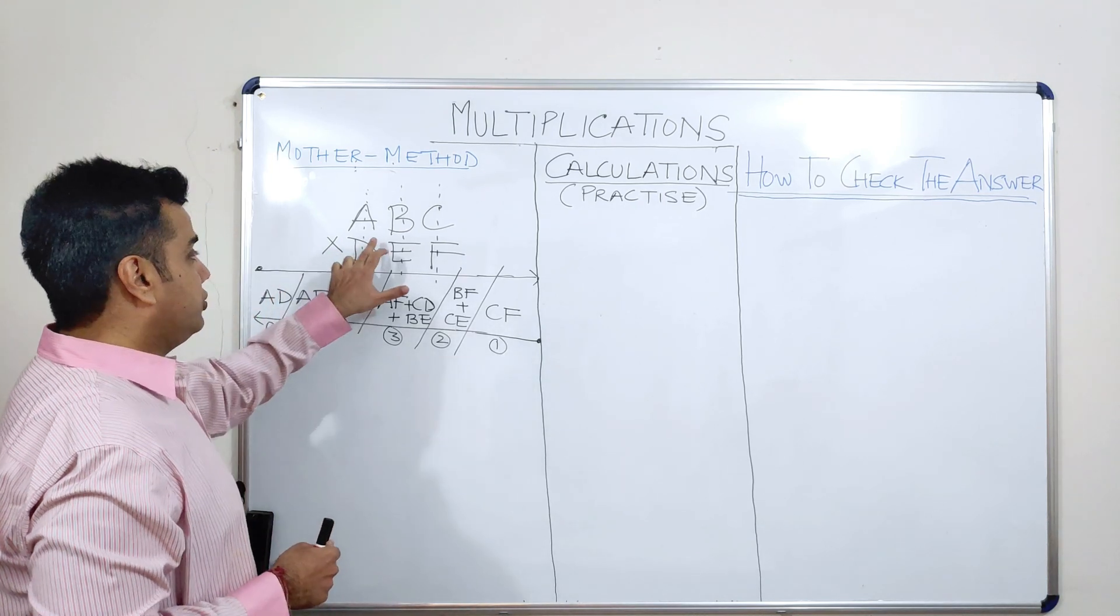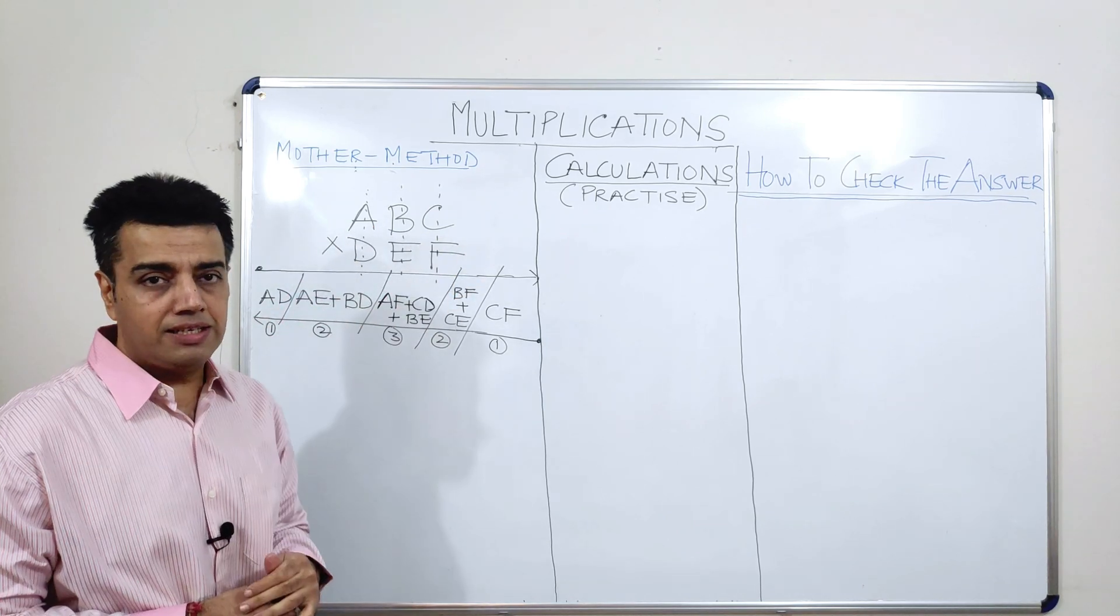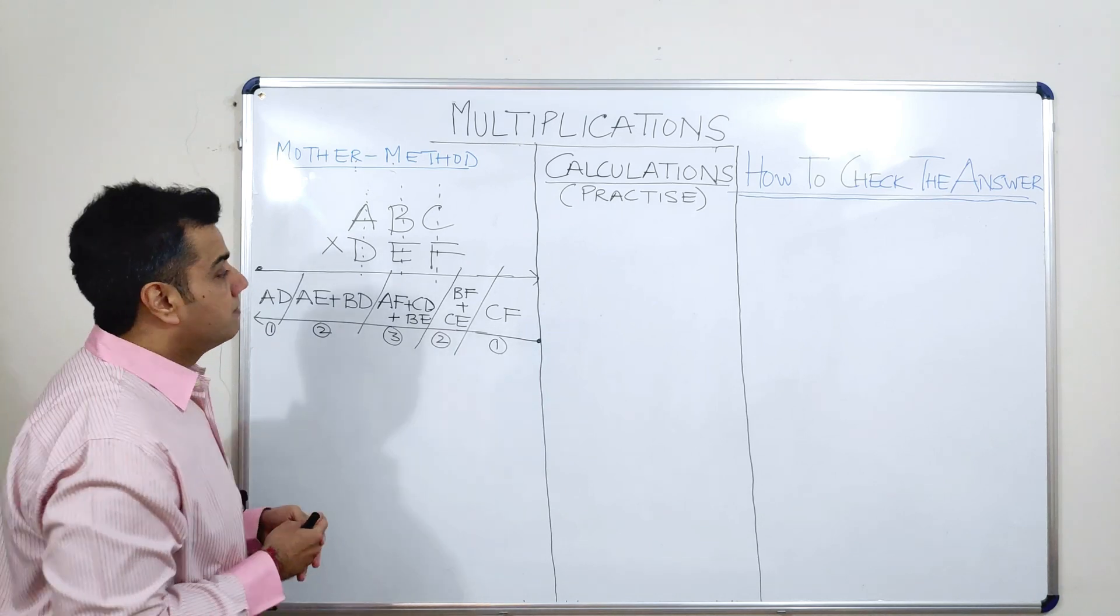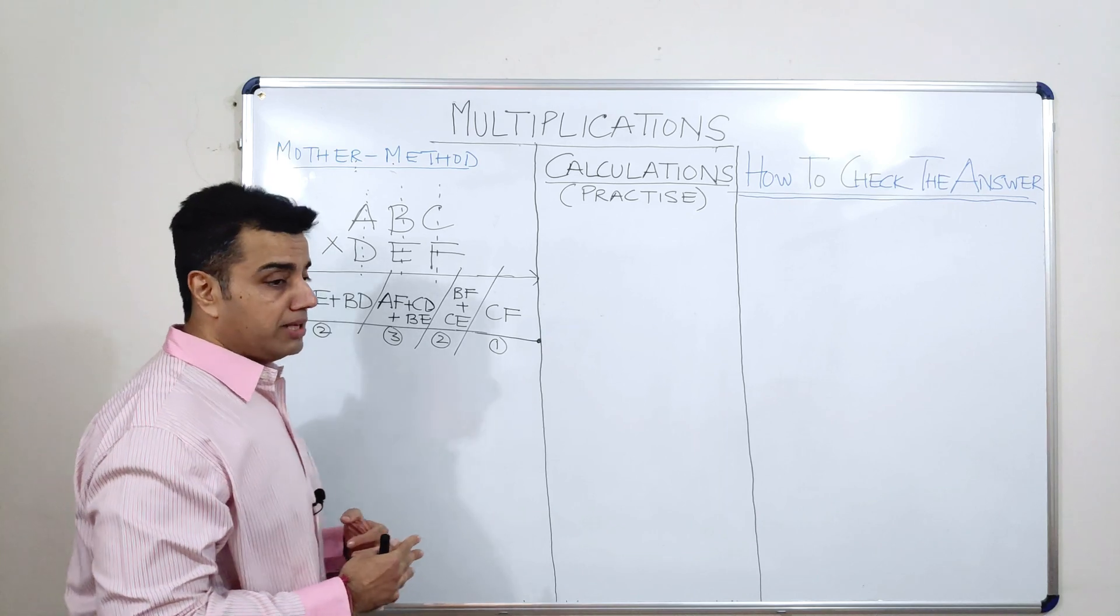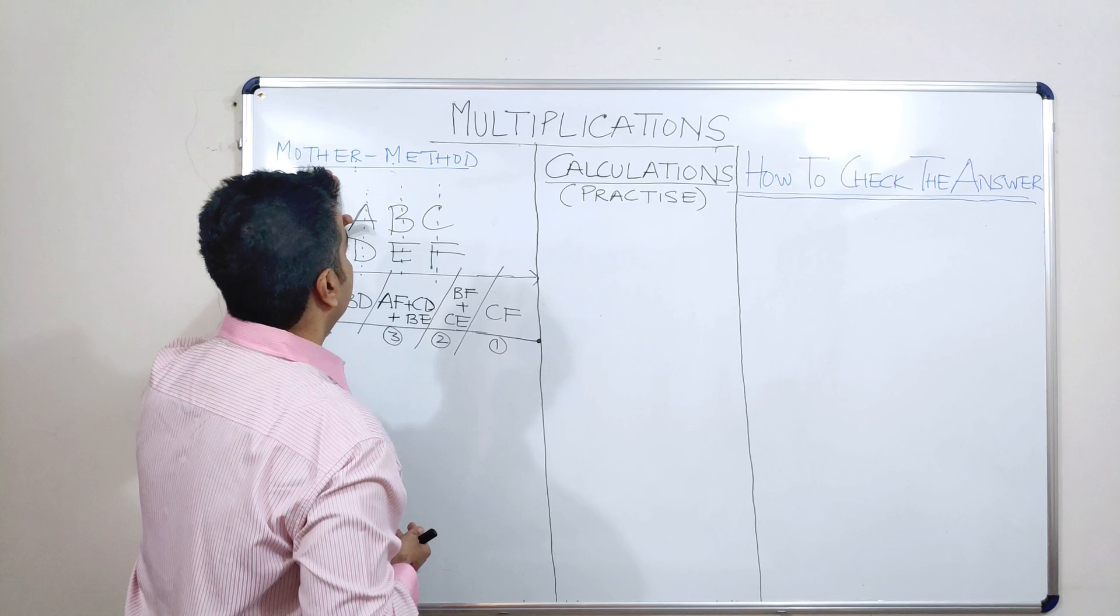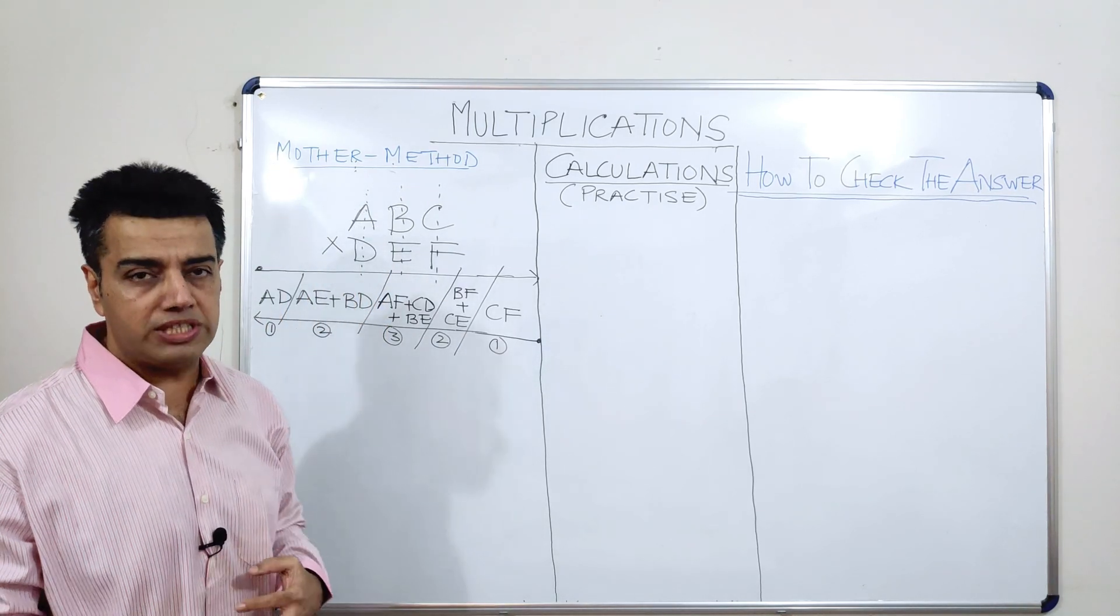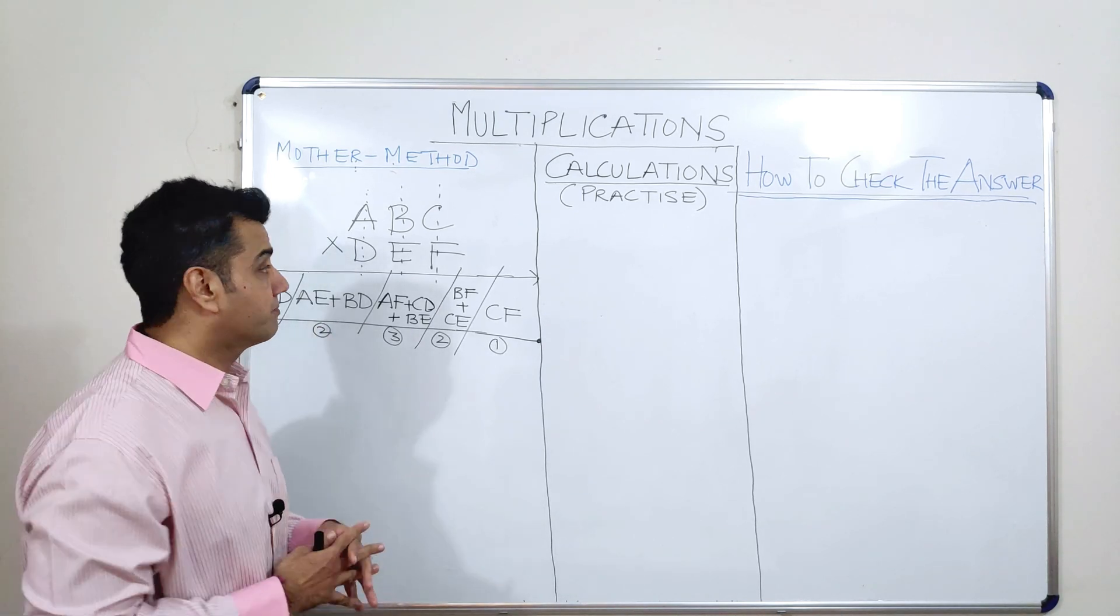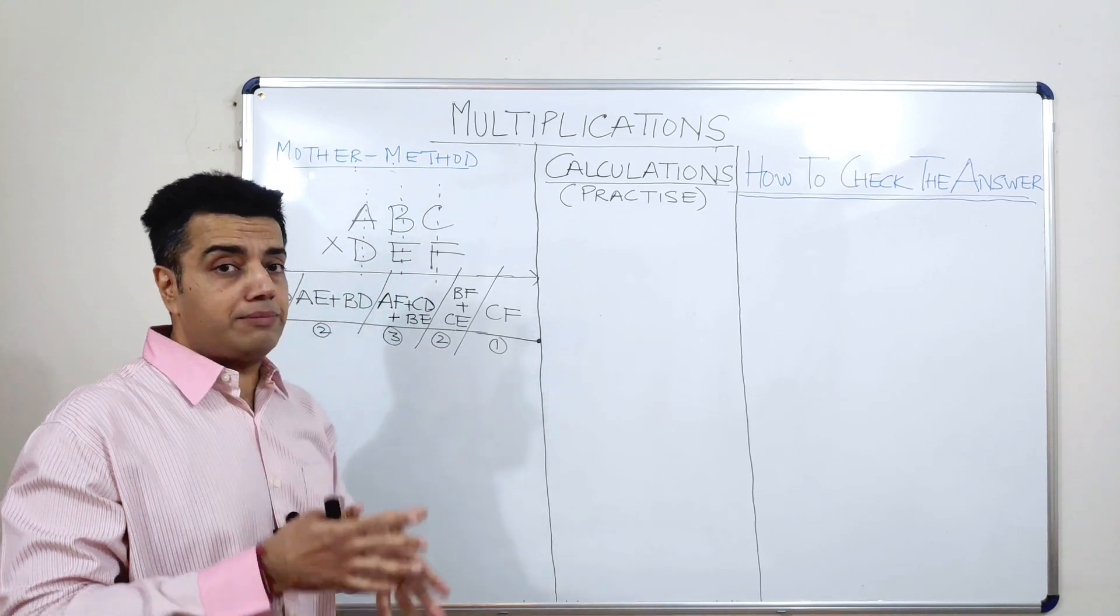So, let us take, I am imagining this as a 3 digit number. I am taking a 3 digit number like ABC to be multiplied with another 3 digit number which is DEF. And then, I am doing the same thing as I have done in my earlier videos. The method still remains the same. Whether I talk about 2 digits or 3 digits or 4 digits, the modus operandi would remain the same. So, I am drawing 3 columns here.